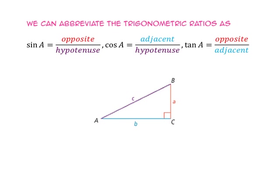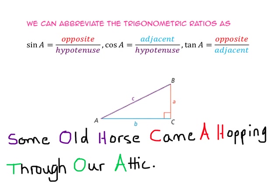When I learned about trig, I used the phrase "some old horse came a-hopping through our attic" to help me remember the trig ratios. "Some old horse" tells me that sine equals opposite over hypotenuse. "Came a-hopping" reminds me that cosine equals adjacent over hypotenuse. And "through our attic" reminds me that tangent equals opposite over adjacent.